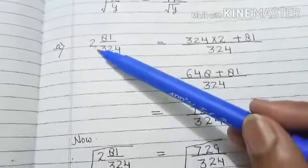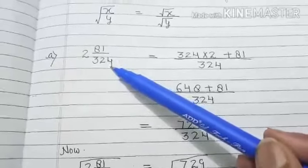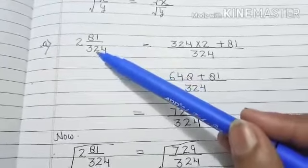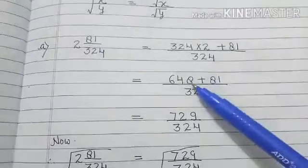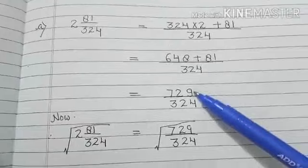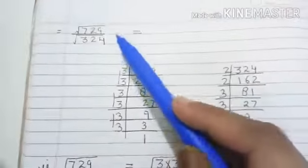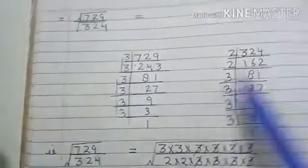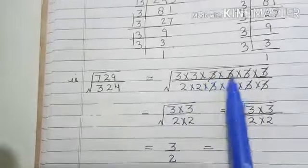Let's take an example. This is question number 1: 2 whole 81 by 324. So first we will write in the improper form. So you will multiply 324 by 2 and then you add 81, so 648 plus 81, then you get the number 729 by 324. So what we will do, we will find out the square root separately. So we will find out the prime factors. We are here using the prime factor method.